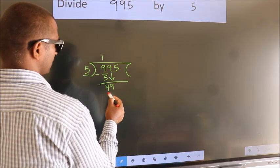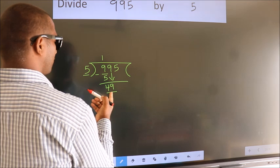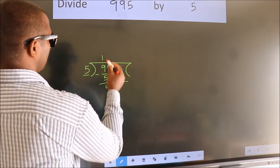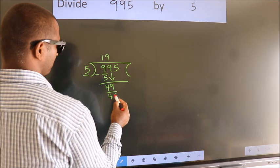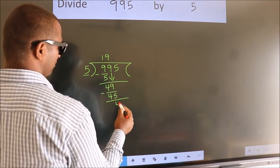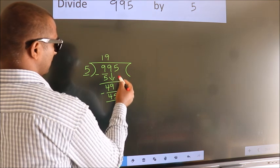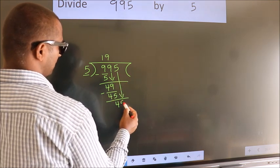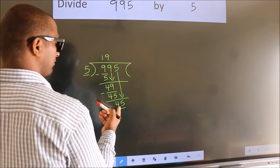Bring 9 down, so we have 49. A number close to 49 in the 5-times table is 5 nines, which is 45. Now we subtract — we get 4. After this, bring down the beside number, so 5 comes down, giving us 45.